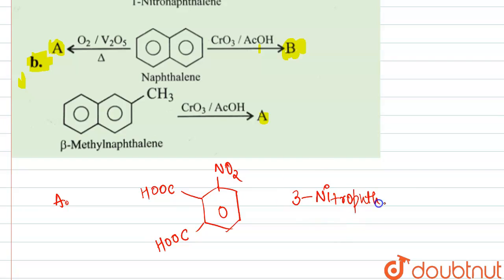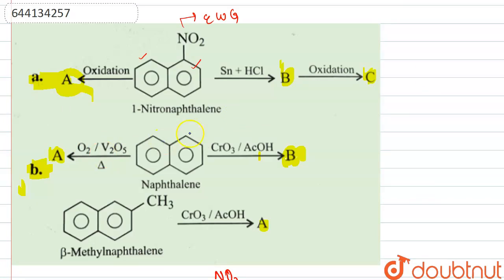3-nitrophthalic acid. This is product A. Now if we talk about 1-nitronaphthalene being reduced.